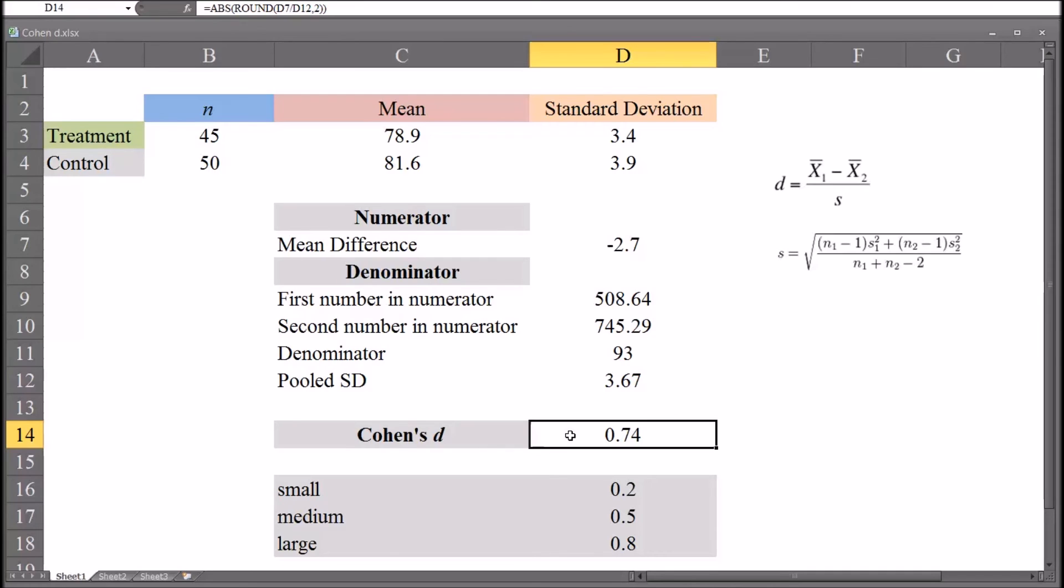Now there are many different interpretations for determining what a Cohen's D value means. For a particular experiment, you can find many different cutoff values. This is one that I use as a general reference for effect size for Cohen's D. A small effect size would be around 0.2, a medium 0.5, and a large 0.8.